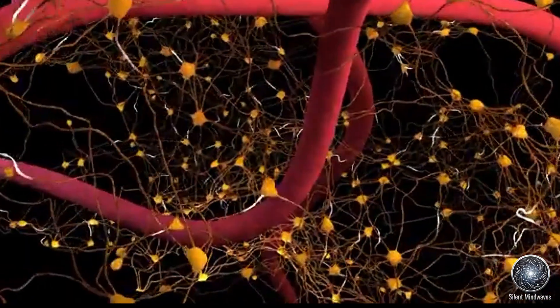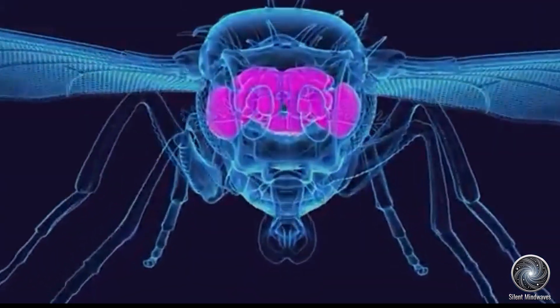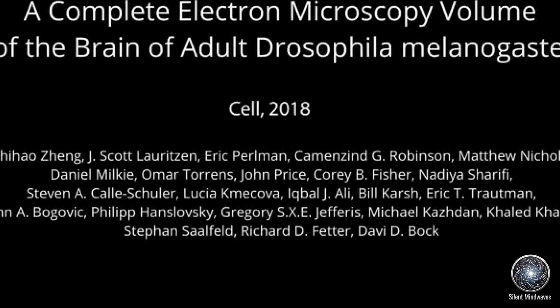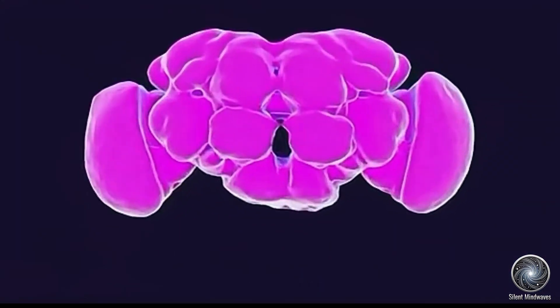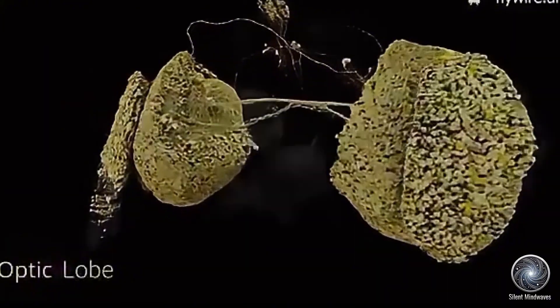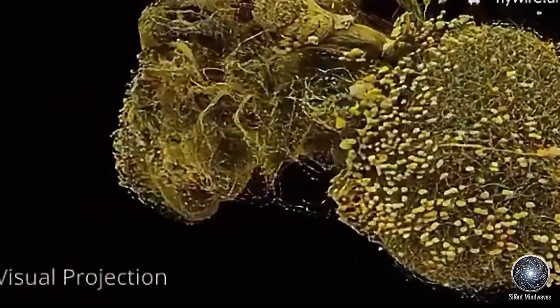For the first time in history, scientists have succeeded in mapping the entire brain of a fruit fly. Published across nine detailed papers in Nature, this achievement marks a crucial step forward not only for neuroscience but for the broader pursuit of understanding consciousness itself.